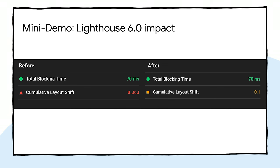Here's the impact that this change has on Lighthouse. We went from a CLS of 0.36 — in the red — back to something better. There are one or two other things on the page that could be improved, but on the whole we've had a relatively significant impact on reducing layout shift.